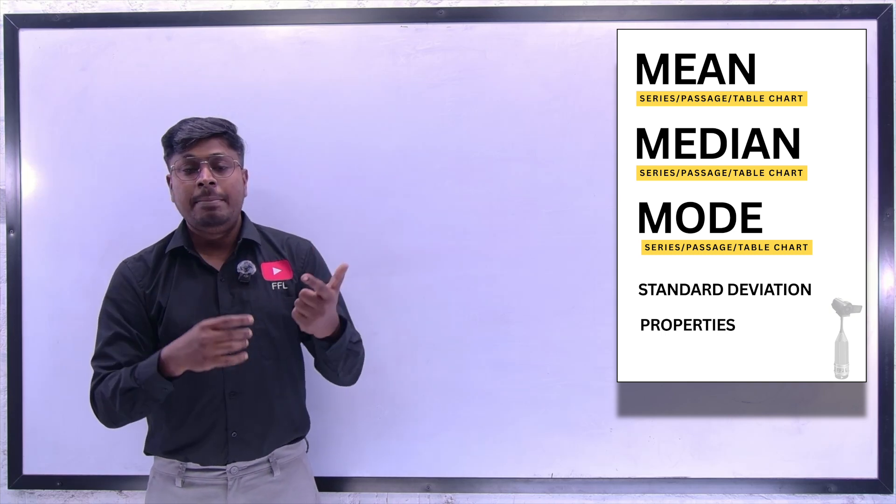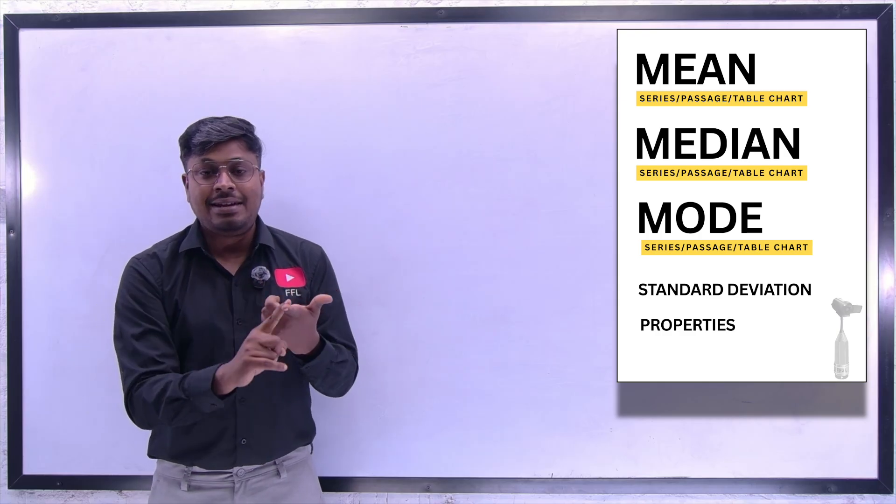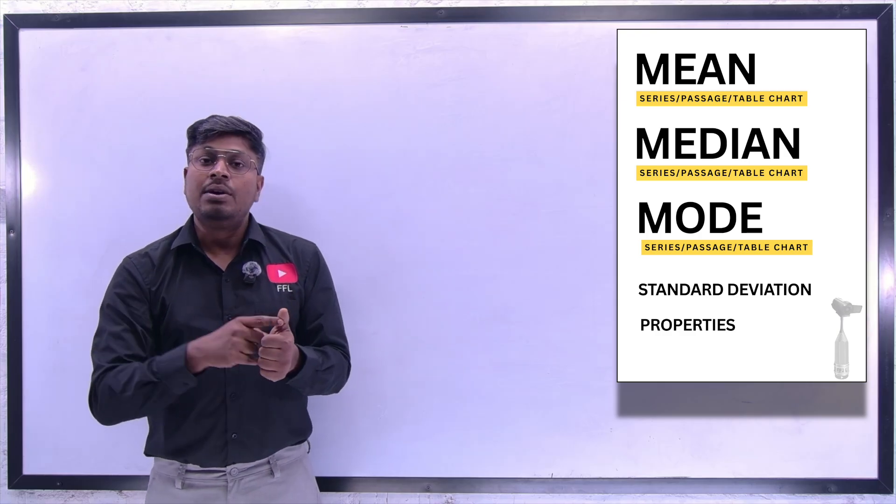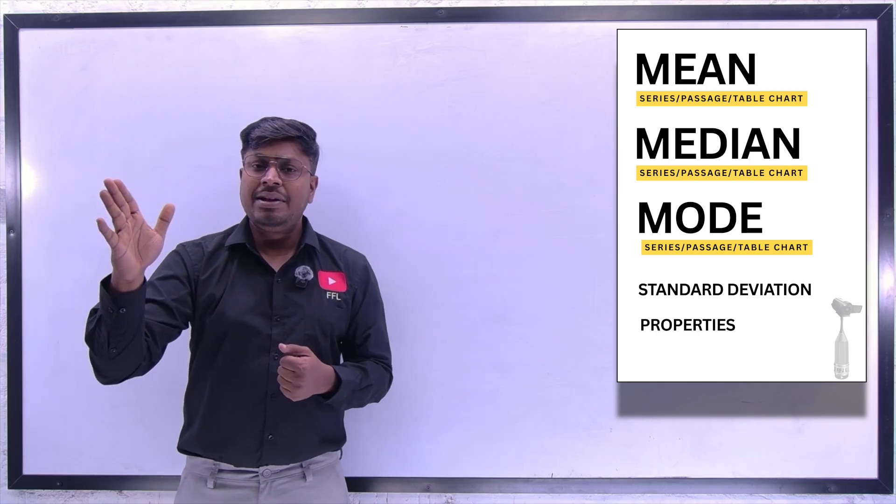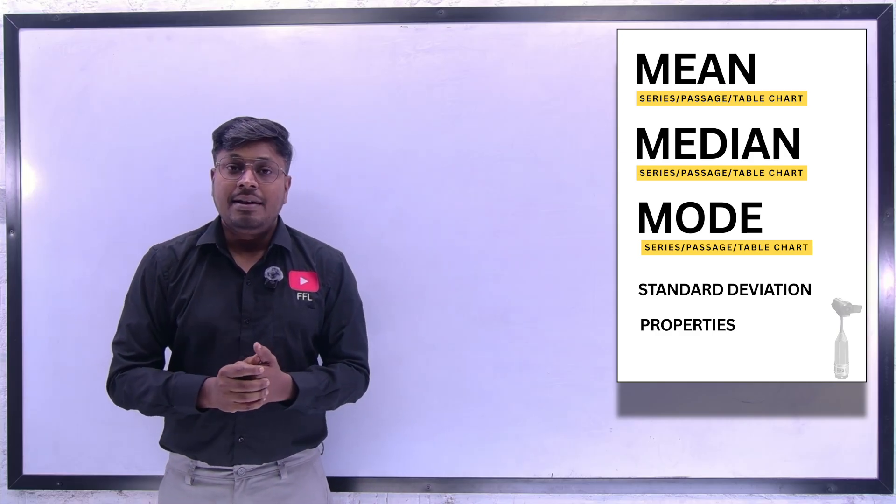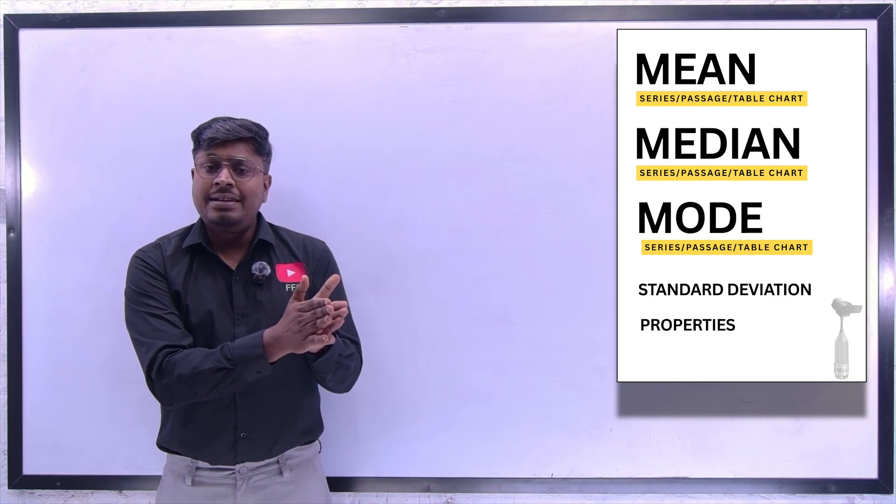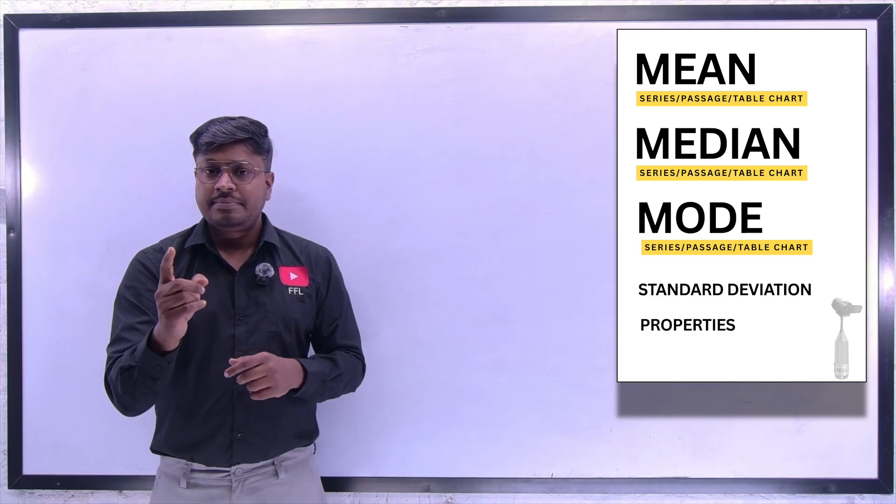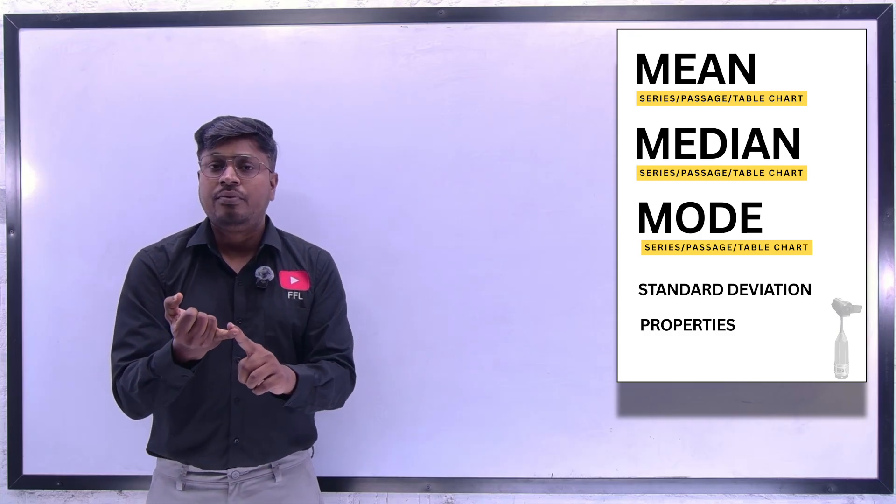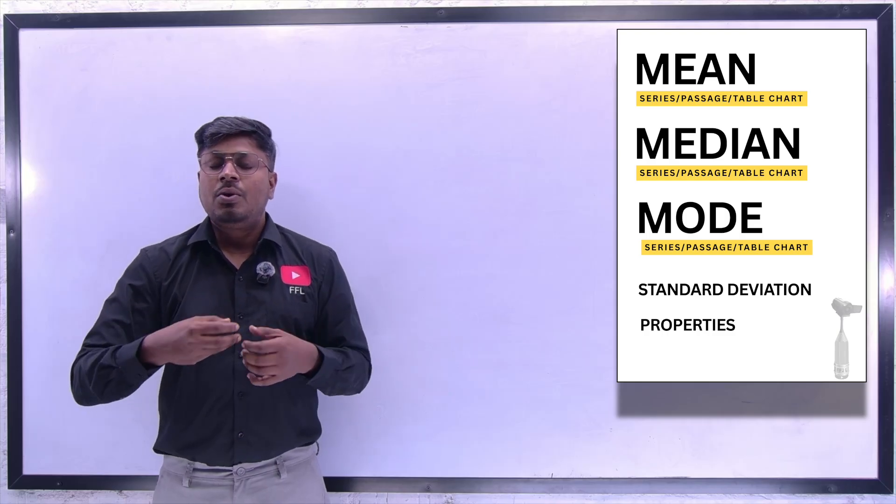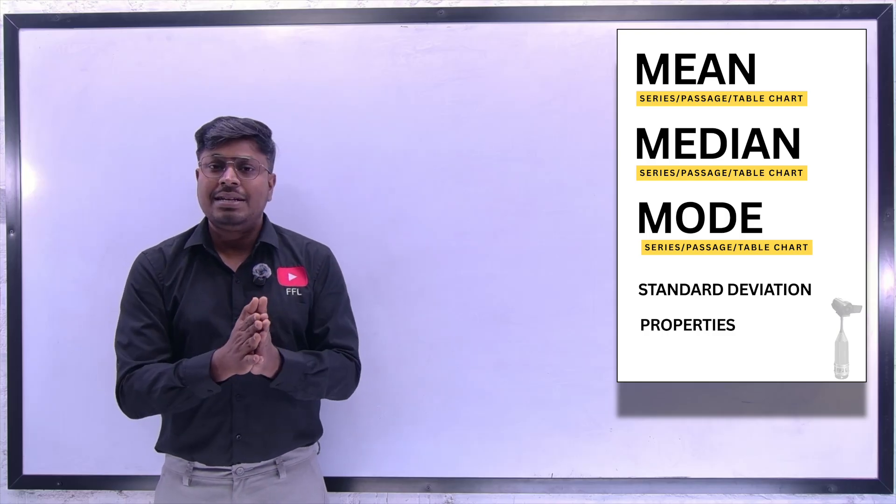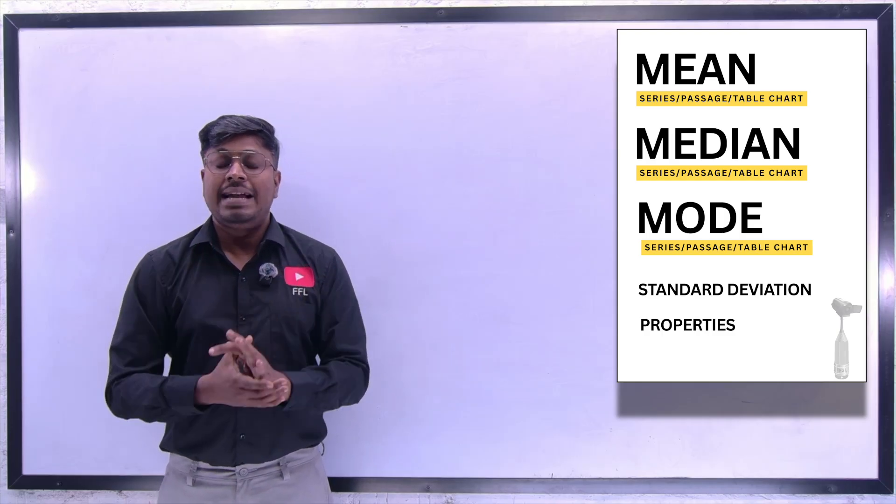Other than this we have two important areas. One is standard deviation and the last is properties. So property is like LHS equals RHS, a basic property. Standard deviation we have one formula, mean we have one formula, median we have one formula, and mode we have one formula. So totally four to five formulas are there to solve the complete statistics topic.